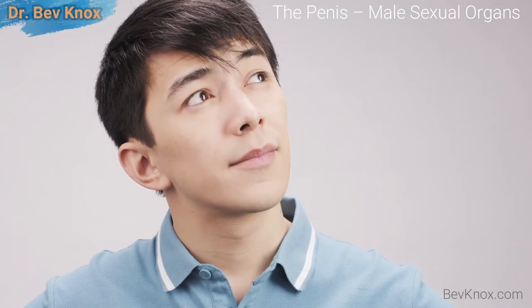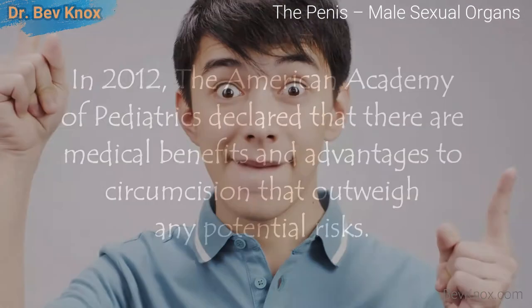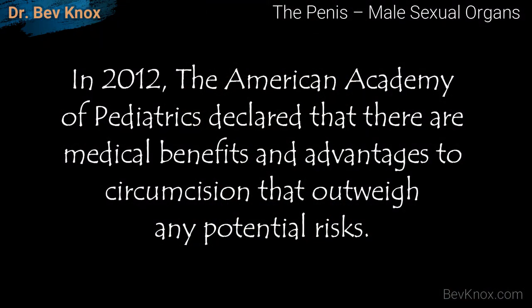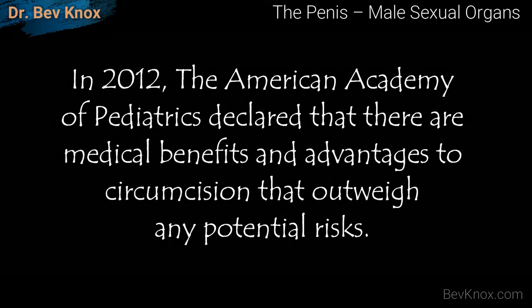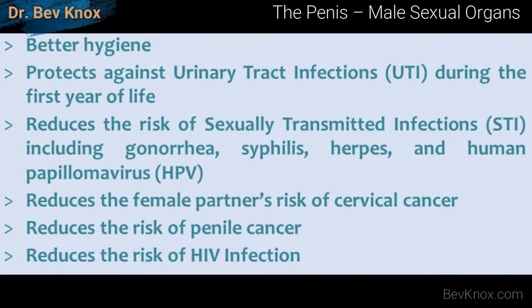New evidence accumulated, and in 2012 the American Academy of Pediatrics declared that there are medical benefits and advantages to circumcision that outweigh any potential risks. The evidence indicates, for example, that uncircumcised male babies are 11 times more likely to get urinary tract infections. There is also evidence that uncircumcised men have a higher risk of infection with HIV and AIDS. It is thought that the foreskin can harbor HIV and other viruses.